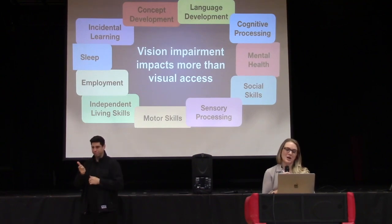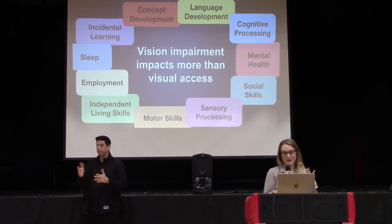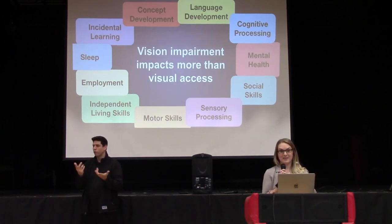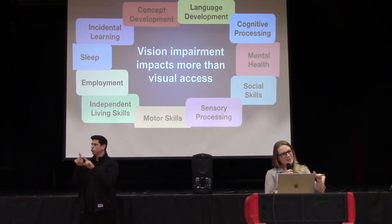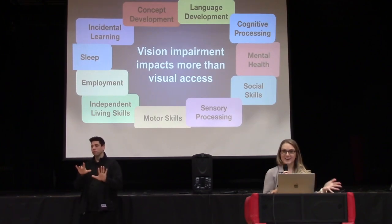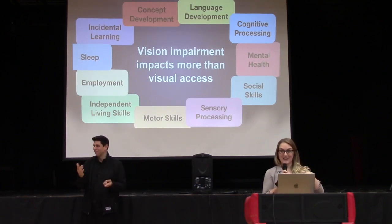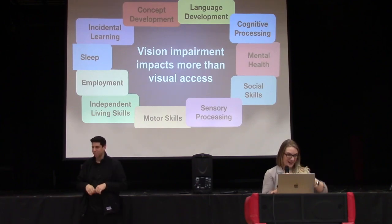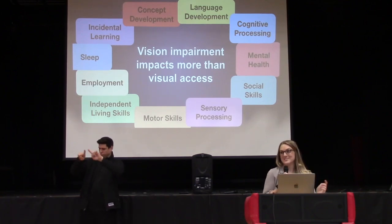I wanted to share some incidental learning examples that really helped me realize the impacts of vision go beyond just the eye. I had elementary school girls doing compare and contrast on a cake and a pizza. When I asked about the shape, they both confidently said pizza is a triangle. They had no idea what pizza looks like before it's sliced — they'd only ever seen a piece on their plate. So we talked about how pizzas and cakes are both made in a round pan, and this was brand new information to them.